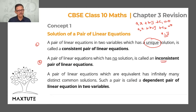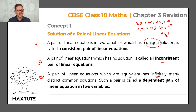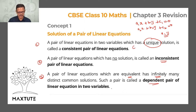There is a third possibility — having infinitely many solutions. A pair of linear equations which are equivalent will have infinitely many distinct common solutions. Such a pair is called a dependent pair of linear equations in two variables. This is also a consistent system, while the second one is the inconsistent one.